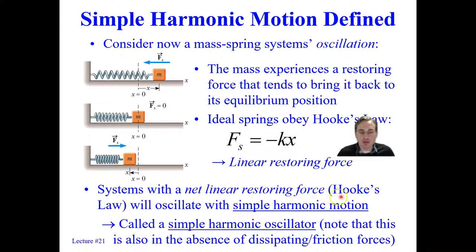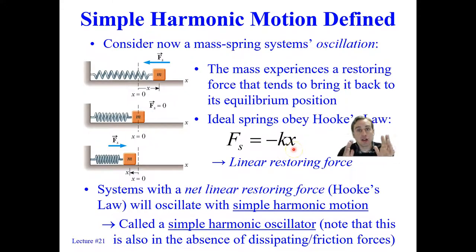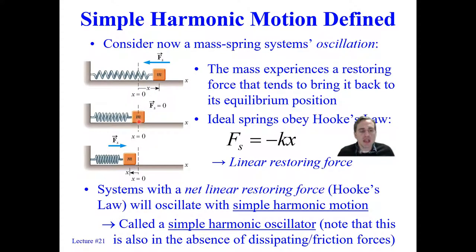Systems with a net linear restoring force — in other words, systems that obey Hooke's Law — will oscillate with simple harmonic motion. The definition of simple harmonic motion is that the restoring force is linearly proportional to the displacement. So if you double the displacement from equilibrium, you get twice the magnitude of the restoring force. This is called a simple harmonic oscillator, and it only holds in the absence of dissipating or friction forces — no non-conservative forces taking away mechanical energy.